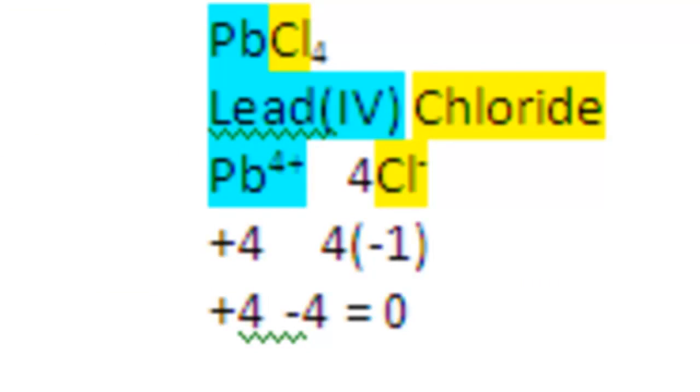Lead also comes in the plus 4 charge state. This is lead 4 chloride. We can determine that it's lead 4 because there's 4 chloride anions. Chloride is always negative 1. The total contribution from the anions is negative 4. There's one lead according to the formula, so that lead must have a positive 4.